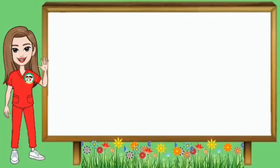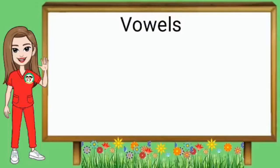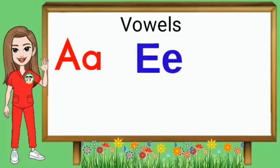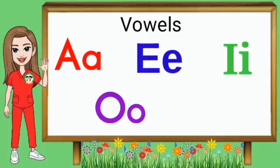Bilang panimula sa ating aralin, balikan muna natin ang five vowels. Ano-ano ba ang five vowels? Ito ang mga sumusunod: A, E, I, O, at U.